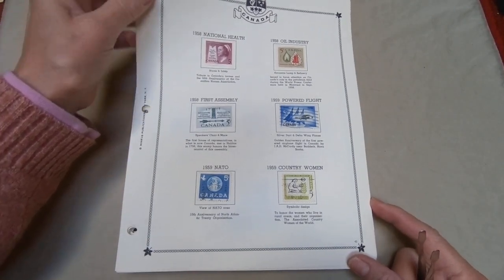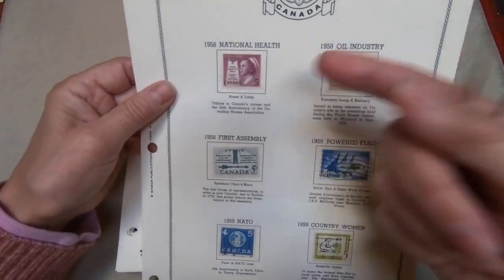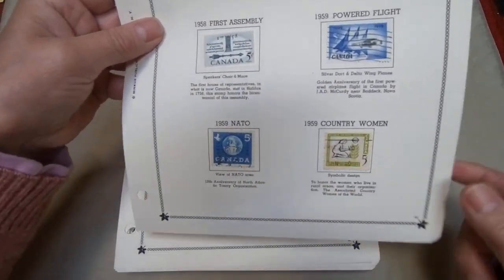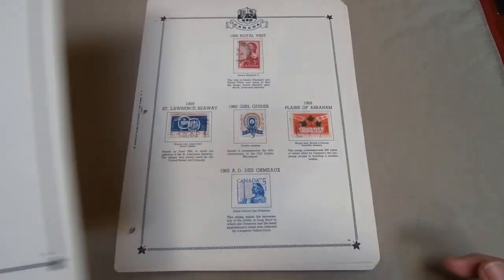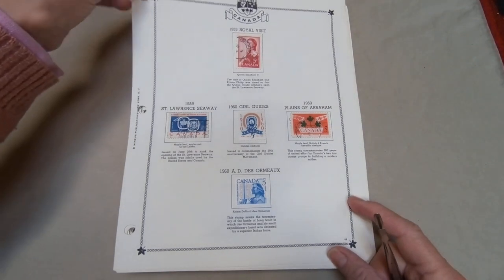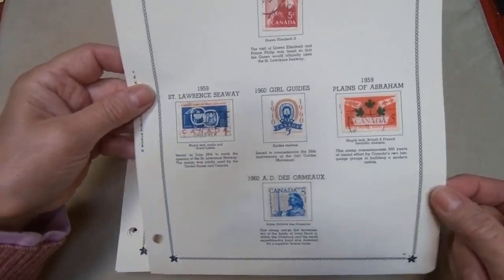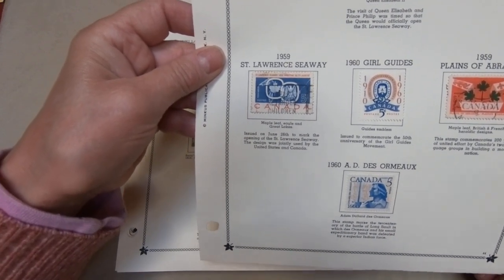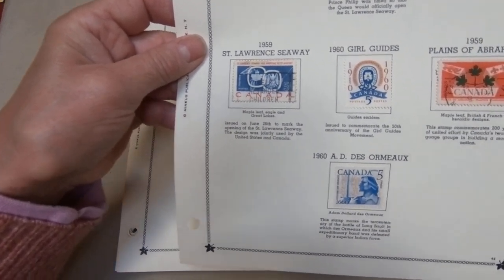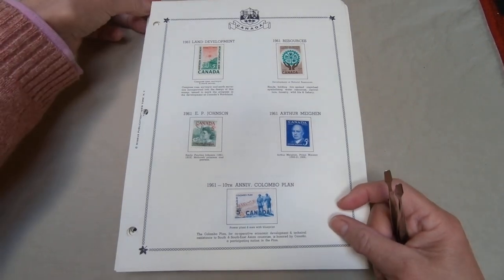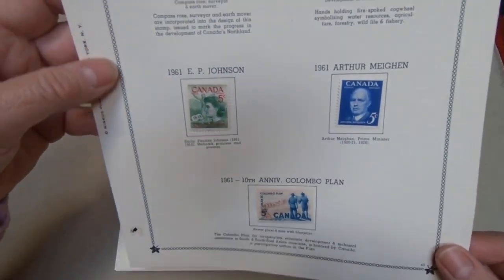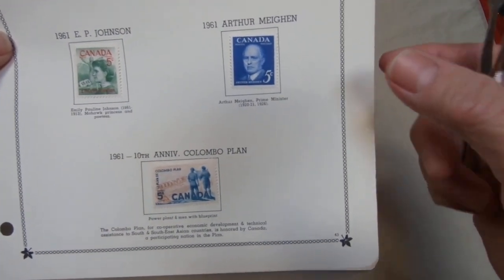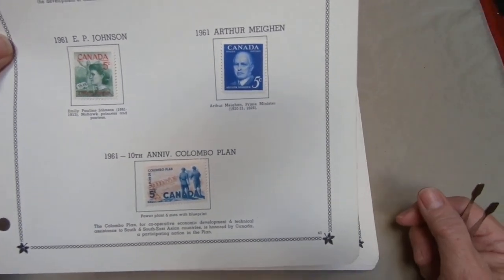Important national subjects such as national health, the oil industry, and NATO are often depicted on Canadian stamps and those of other countries. The Saint Lawrence Seaway is depicted here — this stamp was also issued in the United States with a similar image. Pauline Johnson and Prime Minister Macdonald were among historic individuals featured on stamps.